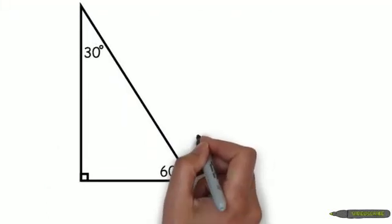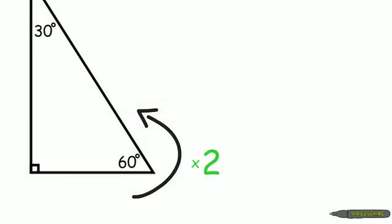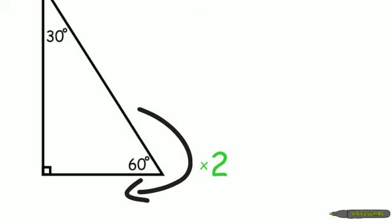And so from that short leg, when you want to find the hypotenuse, you're simply going to multiply by 2. And then if you want to go from the hypotenuse back to the short leg, instead of multiplying, you would divide by 2.